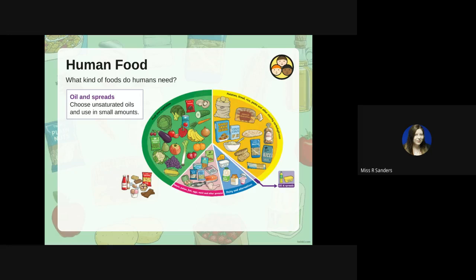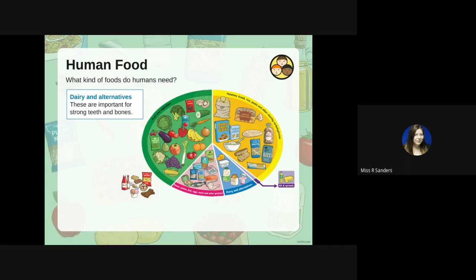Our next category is dairy and alternatives. These are important for making sure we have strong teeth and bones. You need to have your milk, your cheese, and your yogurt, because these are things that keep your bones and teeth healthy and they're a good source of calcium.